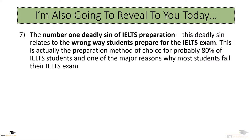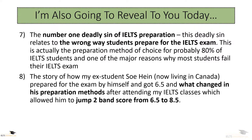Number seven: the number one deadly sin of IELTS preparation. This deadly sin relates to the wrong way students prepare for the IELTS exam — actually the preparation method of choice for probably 80% of IELTS students and one of the major reasons why most students fail. Number eight: the story behind how my ex-student Sohine, now living in Canada, prepared for the exam by himself and got 6.5, and what changed after attending my IELTS classes, which allowed him to jump from band score 6.5 to 8.5.